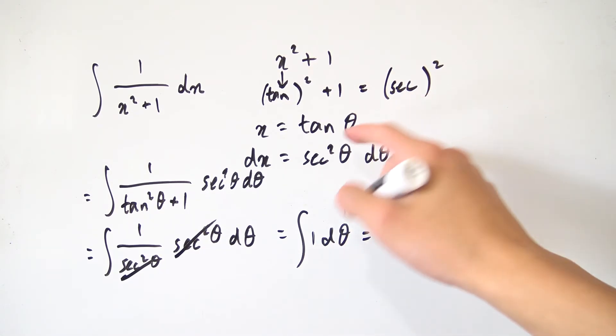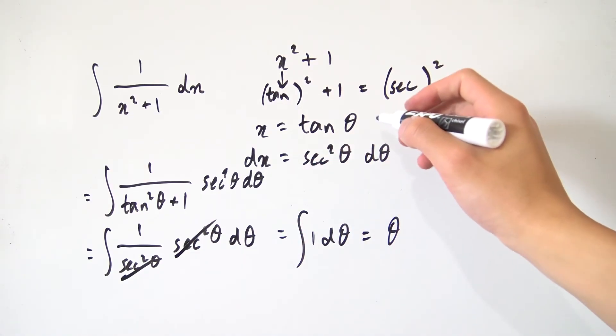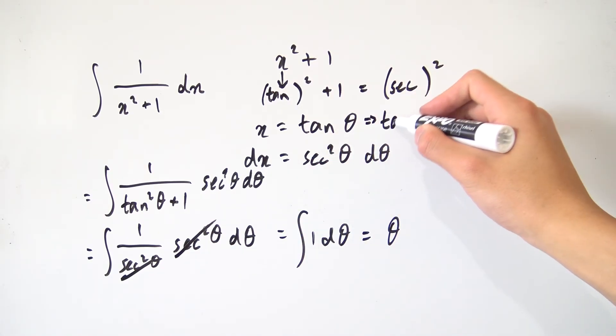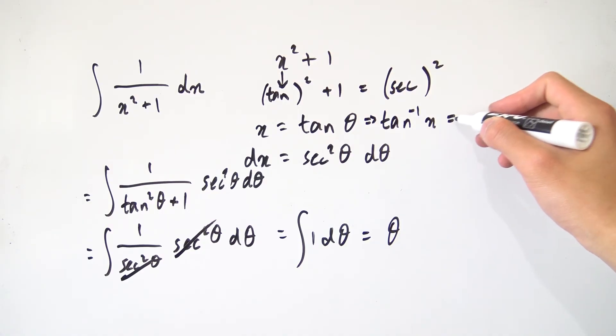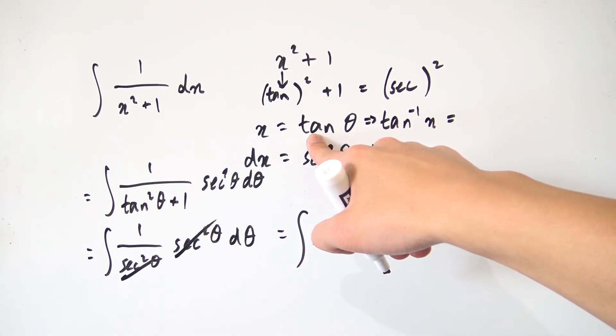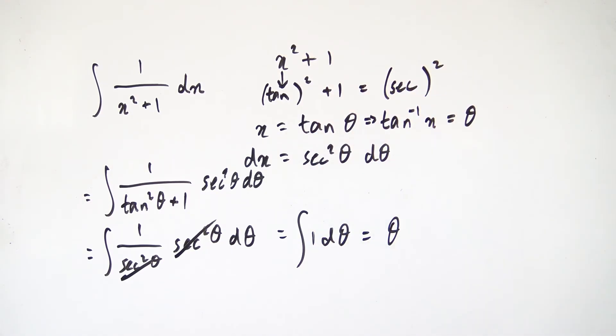So what we can actually do with our substitution is take the inverse tangent on both sides. So we have inverse tangent of x being equal to the inverse tangent of tangent of theta, which is just theta itself. So you see, we have theta right here being equal to tan inverse of x and that will be our final answer. So tan inverse of x like so. And don't forget your plus C and this is the final answer for our integral.